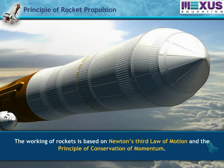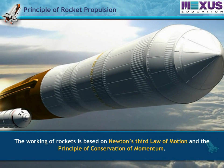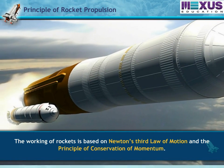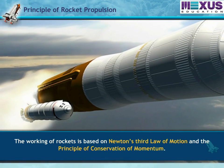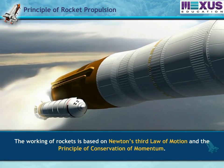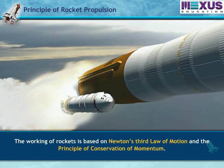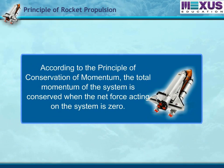The working of rockets is based on Newton's third law of motion and the principle of conservation of momentum. According to the principle of conservation of momentum, the total momentum of the system is conserved when the net force acting on the system is zero.